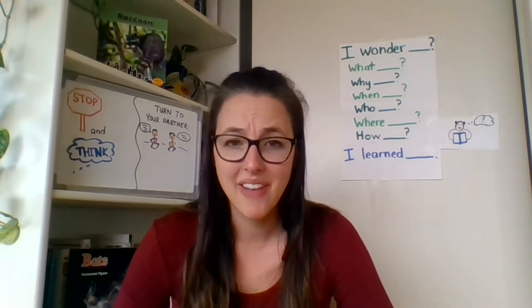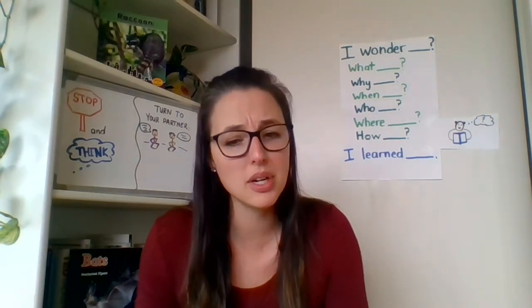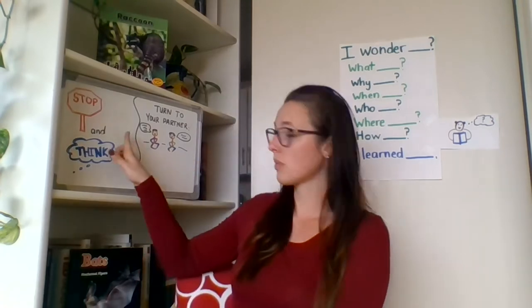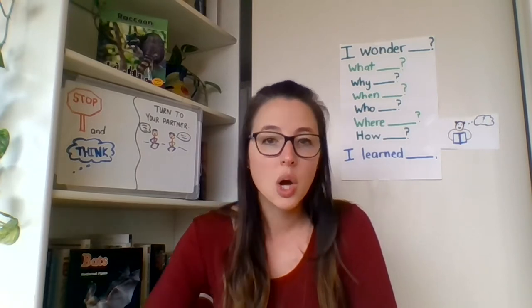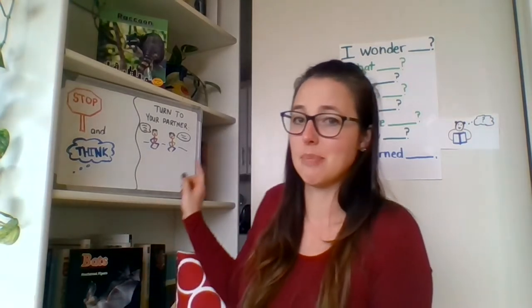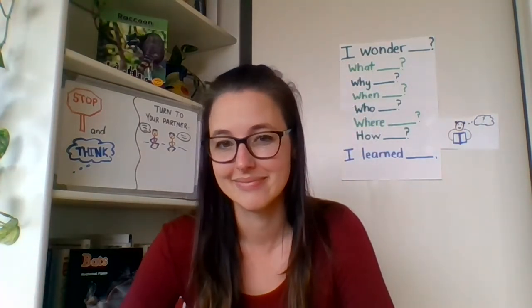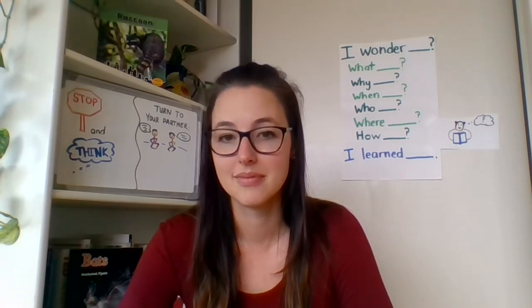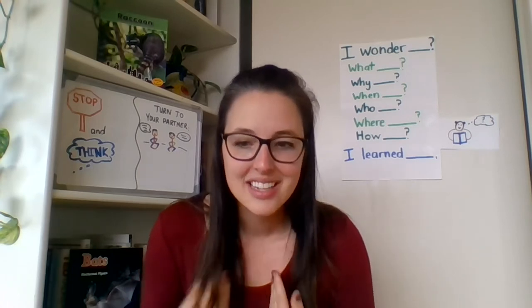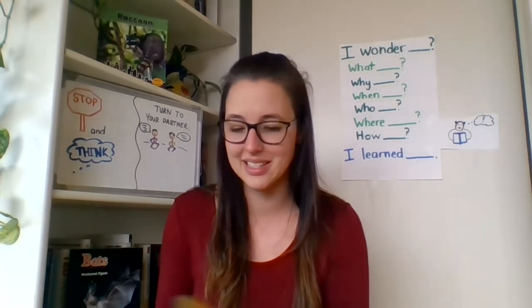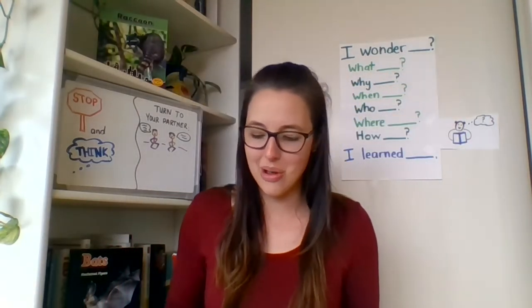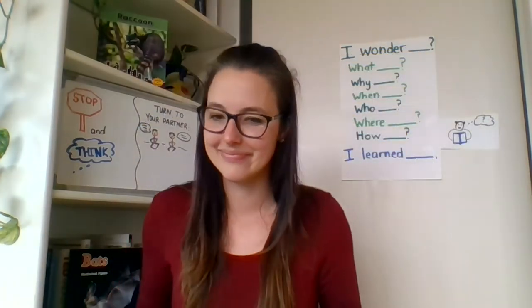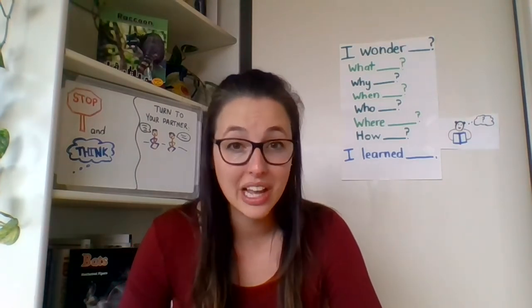Scholars, I want you to think — there were some facts here that I already knew and some things that were new to me. What did this book say about butterflies that you already knew? Go ahead and share with your partner what you already knew about butterflies before we read this book. Did you already know that butterflies have two wings on each side of their body? Did you already know that they had antennae? It's important to think about what we already know because then we can also think about what is new that we're learning.